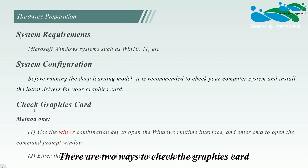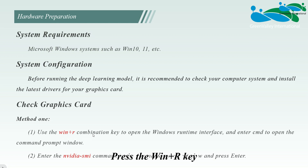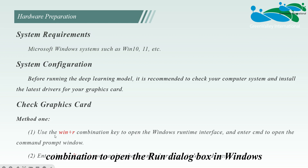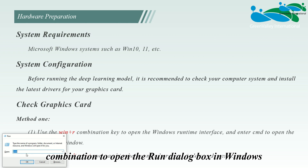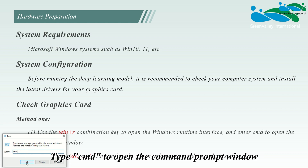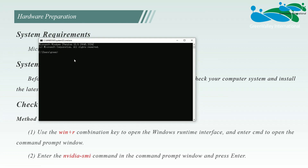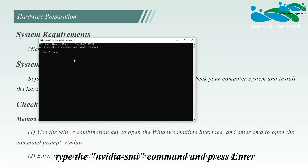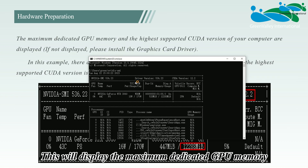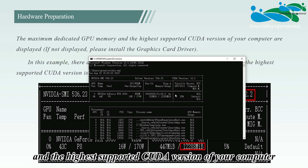There are two ways to check the graphics card. Method one: press the Windows + R key combination to open the Run dialog box, type CMD to open the command prompt window, then type the nvidia-smi command and press Enter. This will display the maximum dedicated GPU memory and the highest supported CUDA version of your computer.